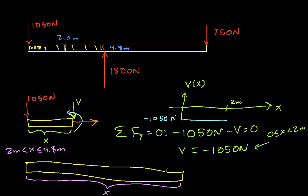The idea here is I cut the beam at this point x. I'm looking now at this free body diagram. I still have the force of 1050 newtons down, but now at 2 meters, I have the force of 1800 newtons up.